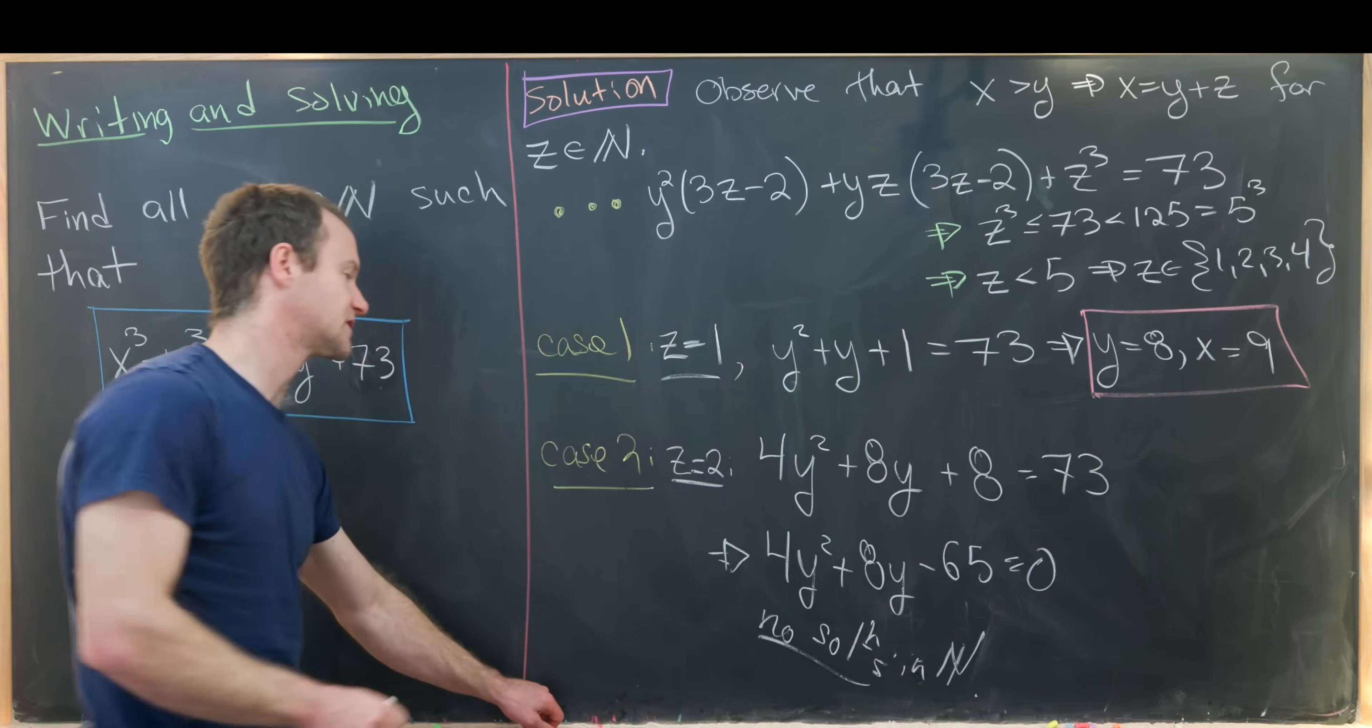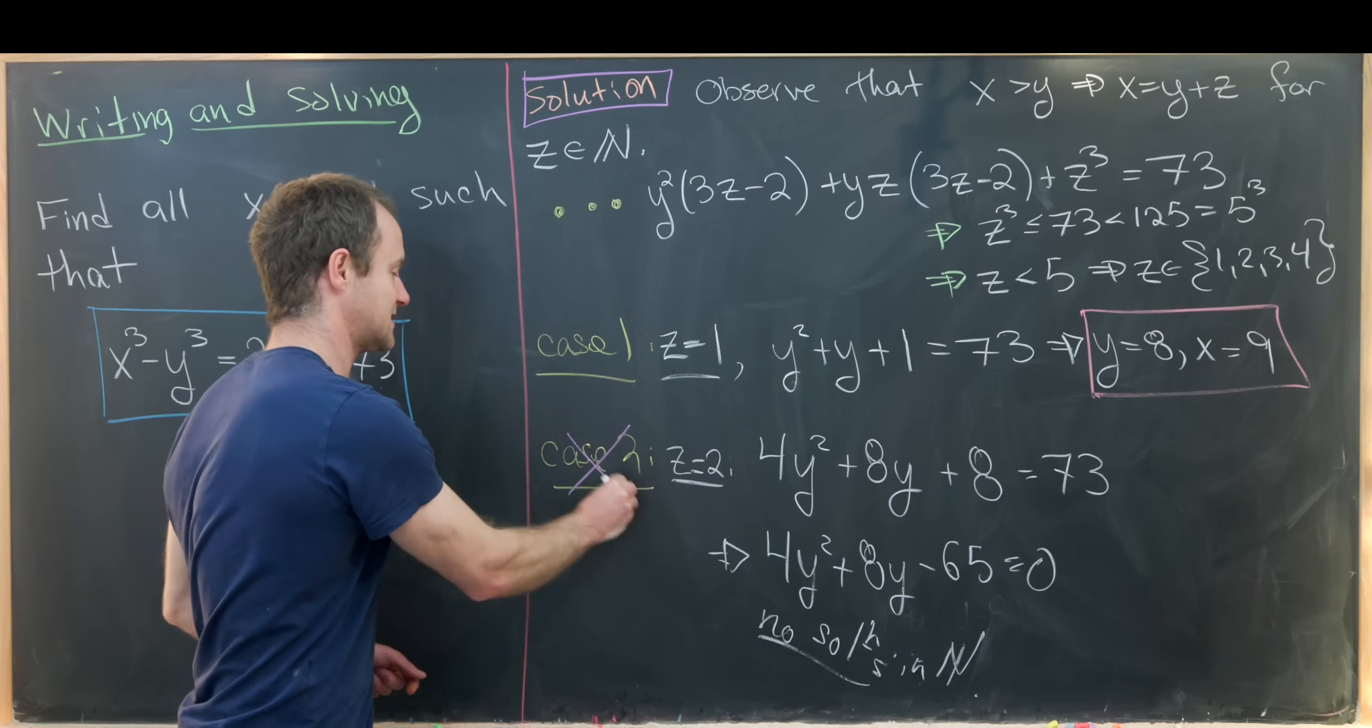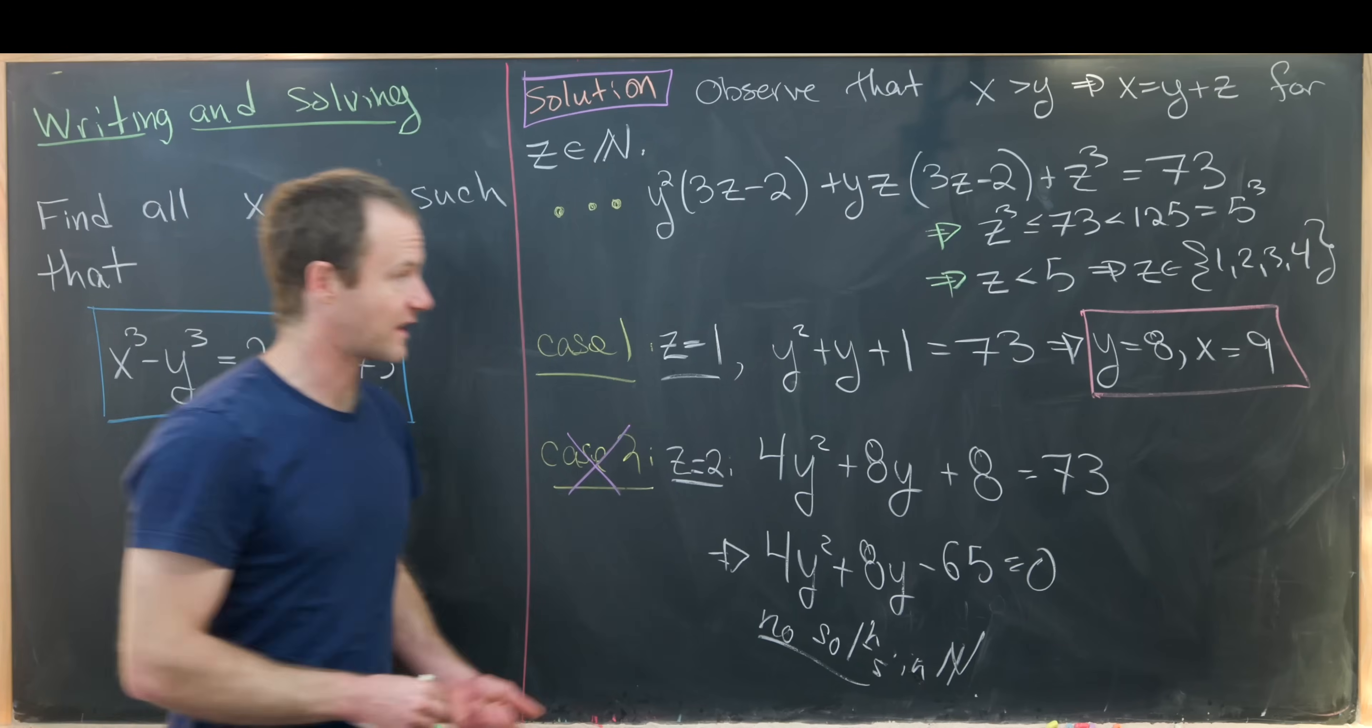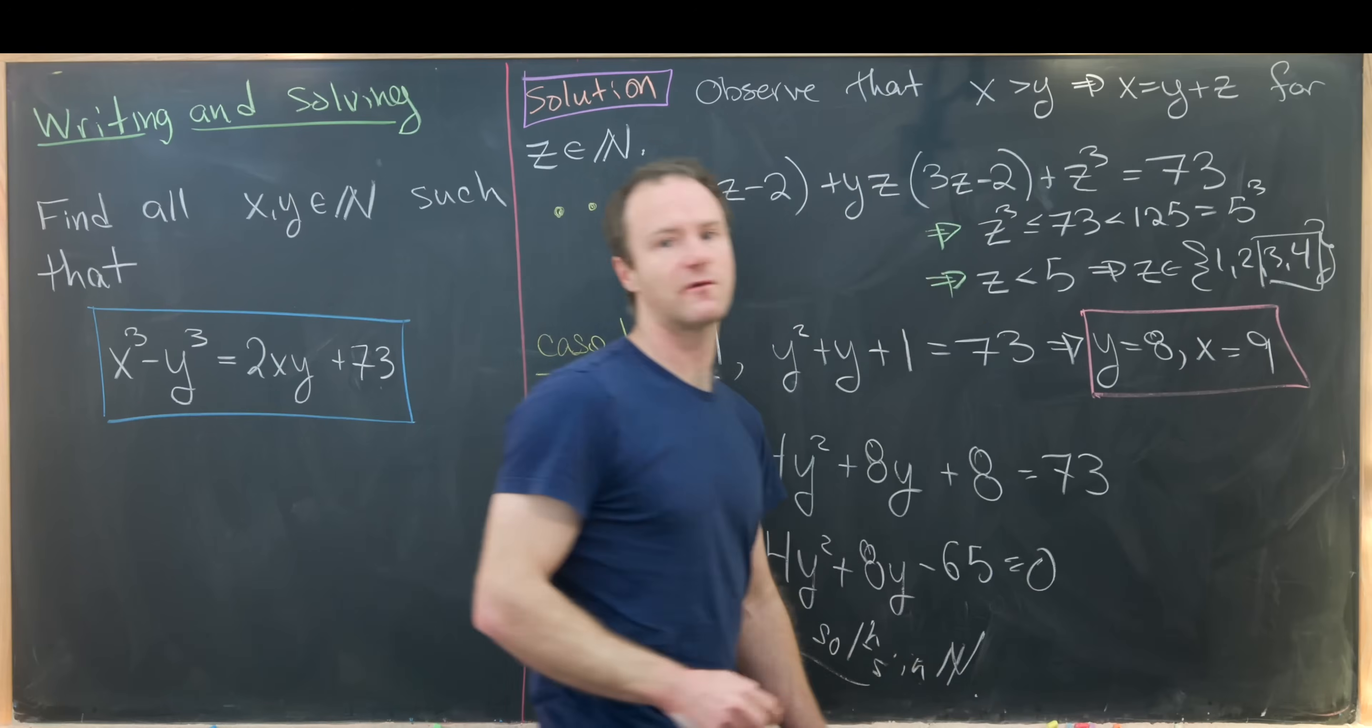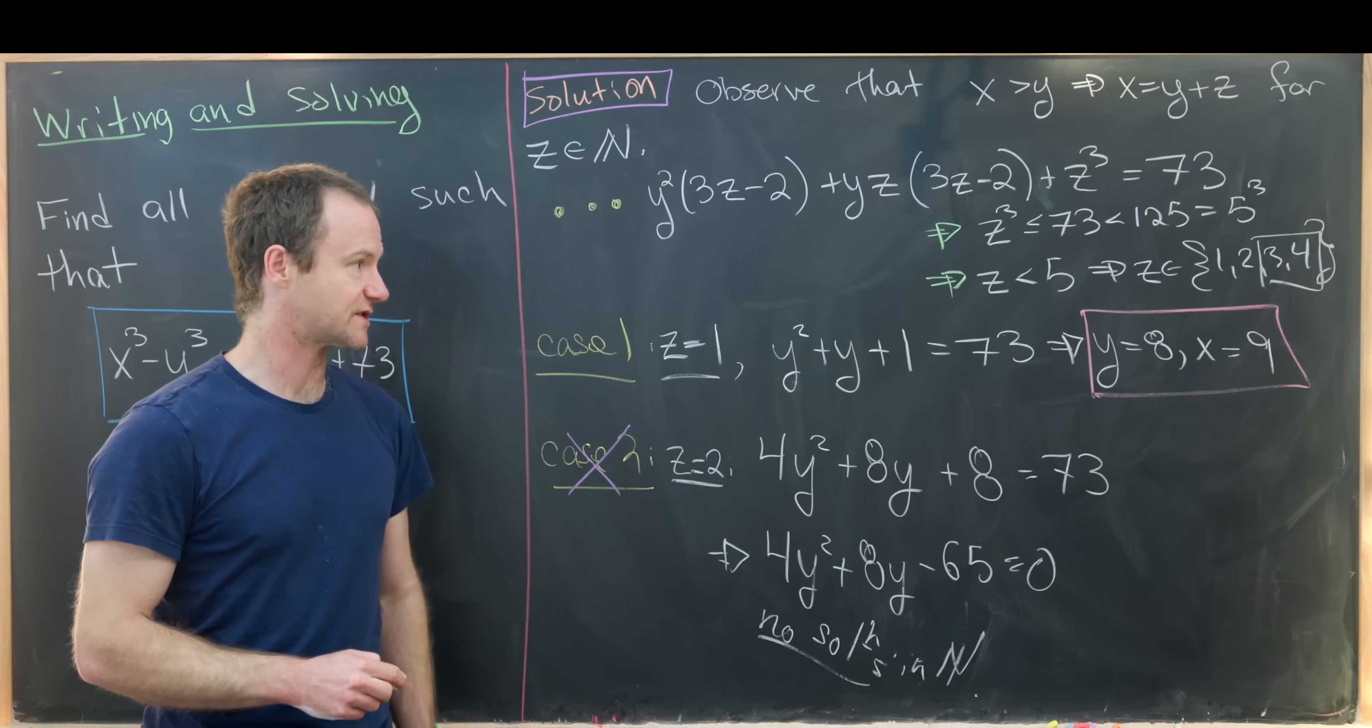So no solutions in N. That means we get no solutions in this second case. And I'll leave the third and the fourth case, in other words the cases when z is equal to 3 and 4, as little nice homework exercises.